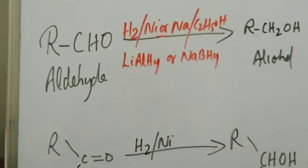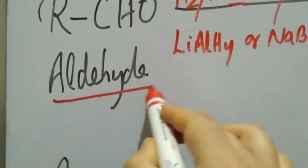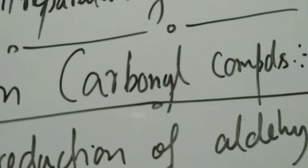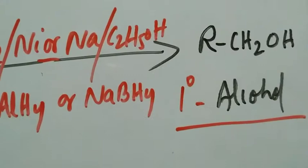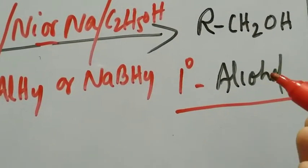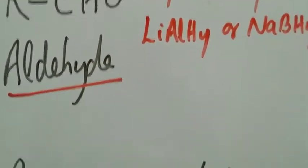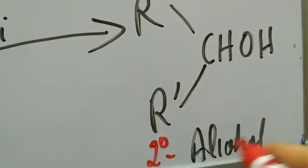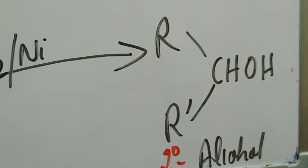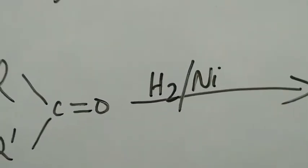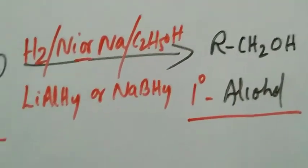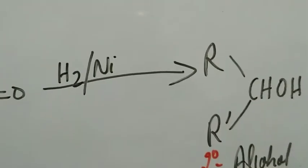This reduction gives us an alcohol. Very important to remember: when you reduce an aldehyde, your product is not just any alcohol — it is a primary alcohol (one degree alcohol). If the required alcohol is a primary alcohol, you reduce an aldehyde. By reduction of a ketone, the product is a secondary alcohol (two degree alcohol). So if you need to produce a secondary alcohol, you start with a ketone.